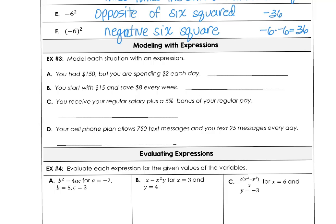For example 3, we're going to model each situation with an expression. So let's say you had $150, but you're spending $2 every day. If you're spending $2 every day, and we let D stand for the number of days, then you start out with $150, but you're reducing that amount by $2 each and every day.